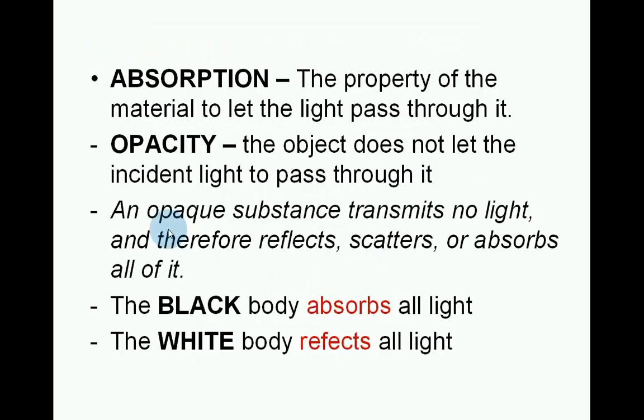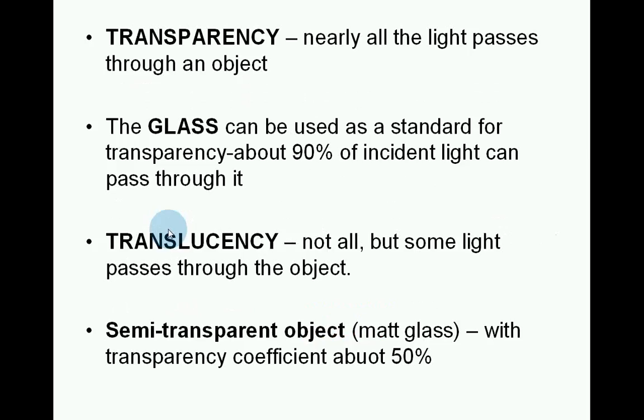Absorption is the property of a material to let light pass through it. Opacity: the object does not let the incident light pass through it; an opaque substance transmits no light and therefore reflects, scatters or absorbs all of it. The black body absorbs all light; the white body reflects all light. Transparency: nearly all the light passes through an object — glass can be used as a standard, with about 90% of incident light passing through. Translucency is where not all, but some of the light passes through the object; a semi-transparent object such as matte glass has a transparency coefficient of about 50%.